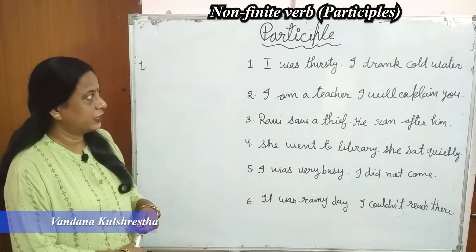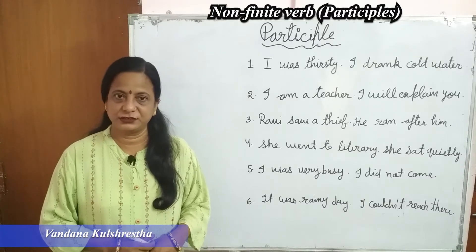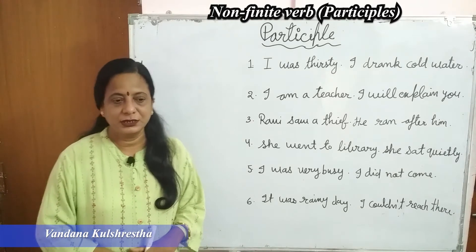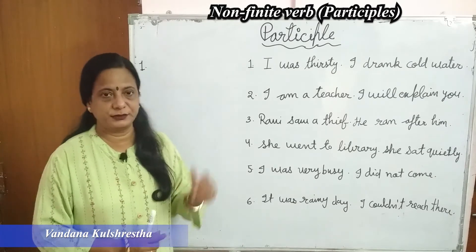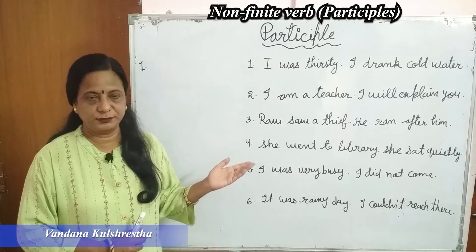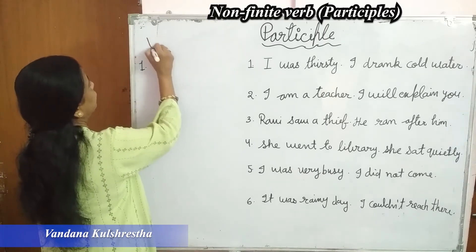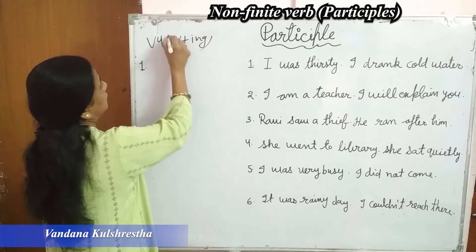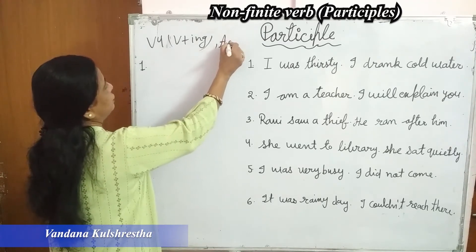Hello everyone, how are you all? If you haven't subscribed to my channel, please subscribe and share it. In today's video lecture I am going to continue the same non-finite word: participle. As you know, we already discussed participle in our previous video. In participle we use V4, meaning verb plus -ing form, and it is also called a verbal adjective — it denotes the adjective as well.